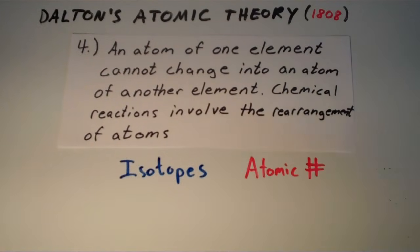The fourth part says that an atom of one element cannot change into an atom of another element. Chemical reactions involve simply the rearrangement of atoms. So the way the atoms are bound together changes in a chemical reaction, but the atoms are not changed from one atom to another, is what Dalton was trying to say here. And this is actually sort of an oversimplification as well,